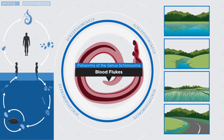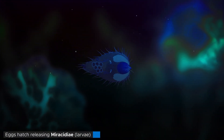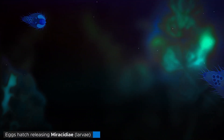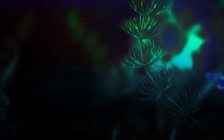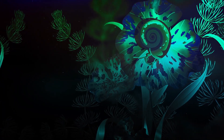Many parasites need to go through complex life cycles with morphologically distinct generations and one or more intermediate hosts before they can infect their final host. And these worms are no exception. They begin their life as tiny larvae floating in the water. Almost immediately after hatching, they start actively looking for their intermediate host — freshwater snails — which they need to develop further.